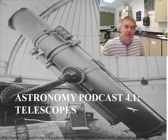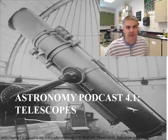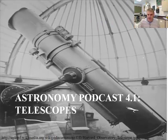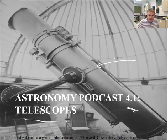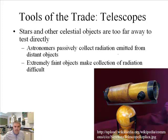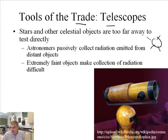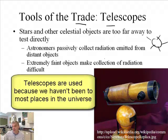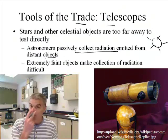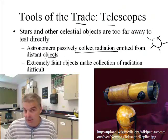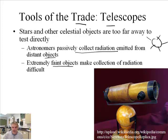The chapter is about telescopes, and we want to learn specifically about them in more detail. Stars and other celestial objects are too far away to test directly — you can't go take a chunk of the sun because it's too far away and also it's pretty hot. So we have to passively collect radiation. It's interesting that it's not just visible light; we can collect light you can't see. Extremely faint objects make this very difficult, so we need some kind of telescope.